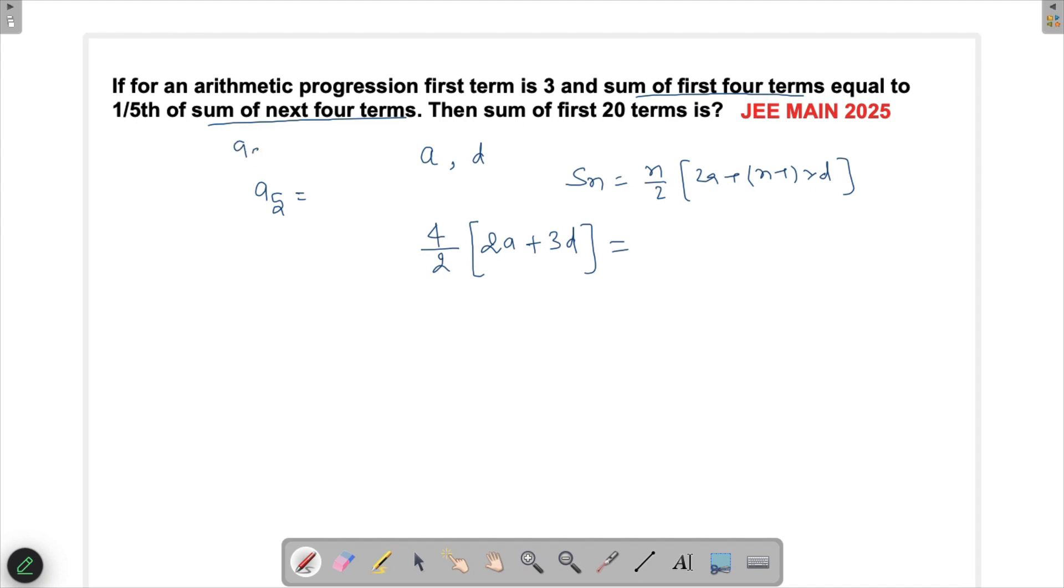This is also an AP with first term a5, which is a + 4d. I can substitute it here: 4/2 times [2(a + 4d) + 3d], where the common difference remains the same.